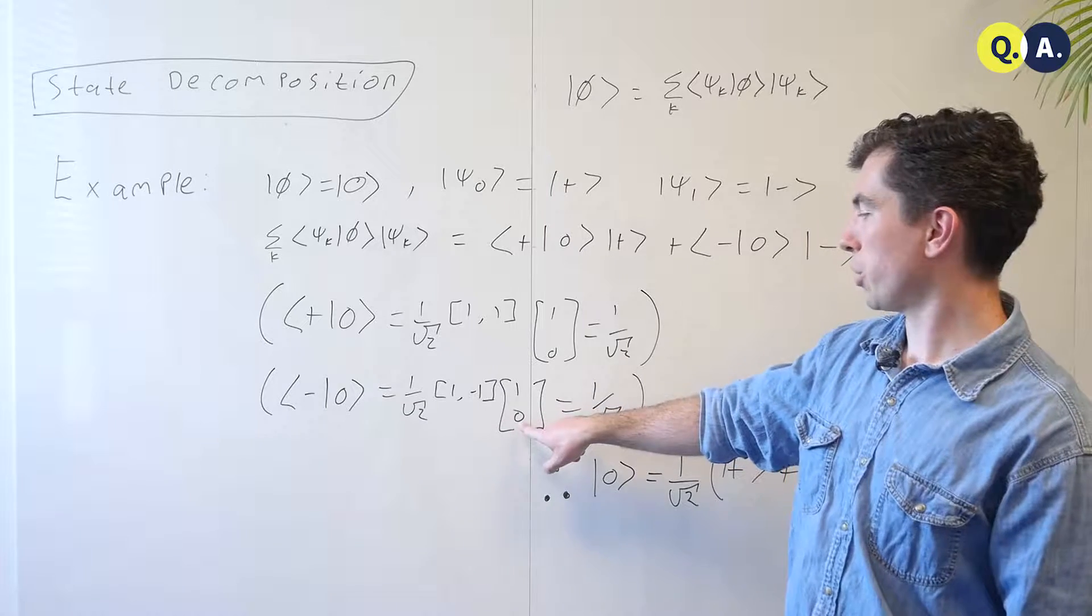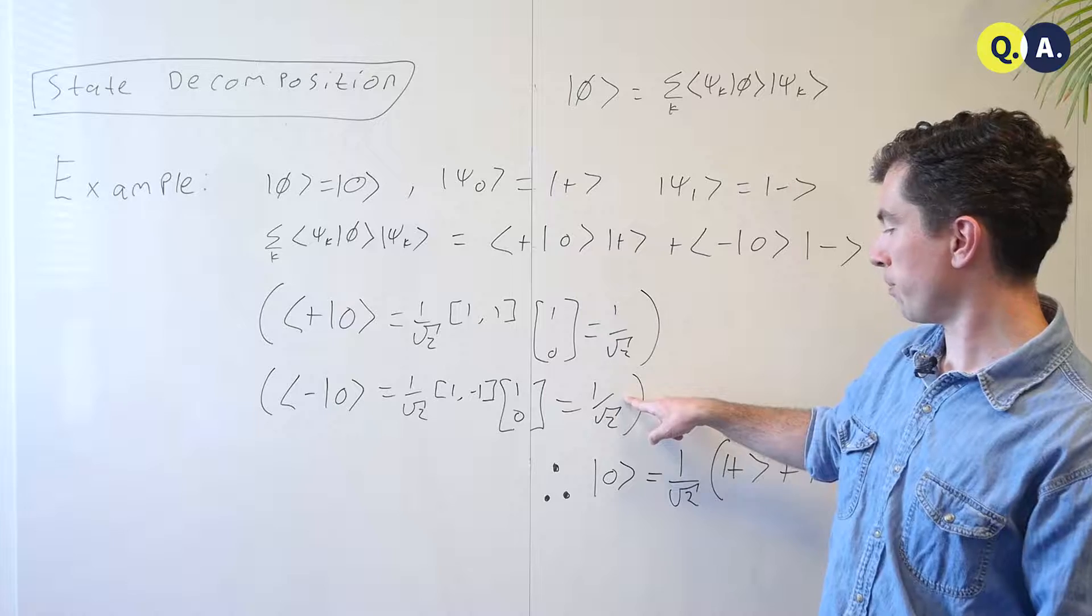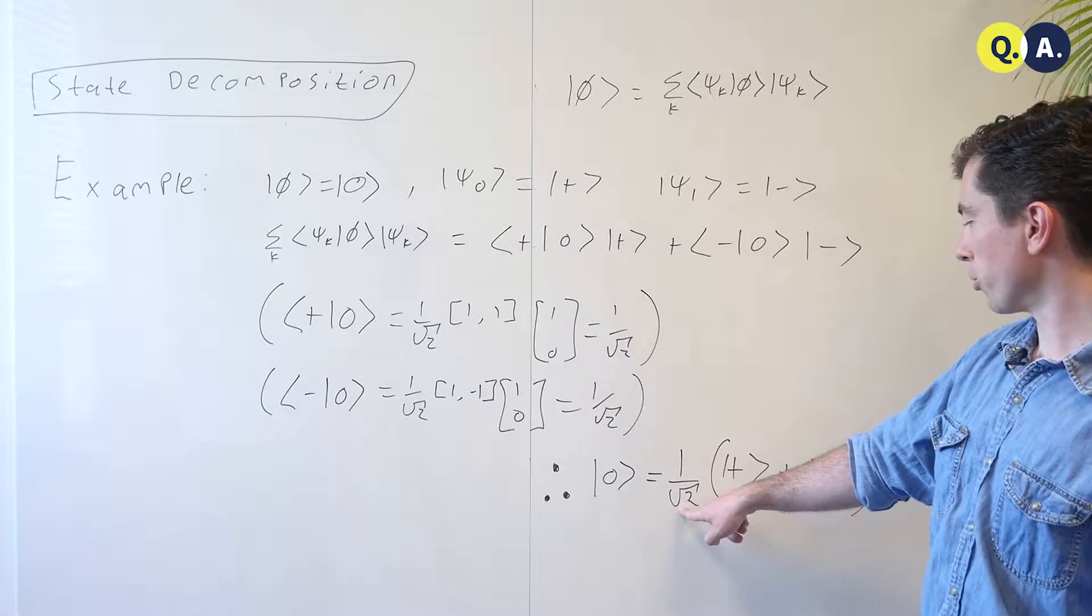There's a minus sign here, but it gets multiplied by zero, making no difference, and we end up with 1/√2 again. Therefore |0⟩ can be decomposed as 1/√2(|+⟩ + |−⟩).